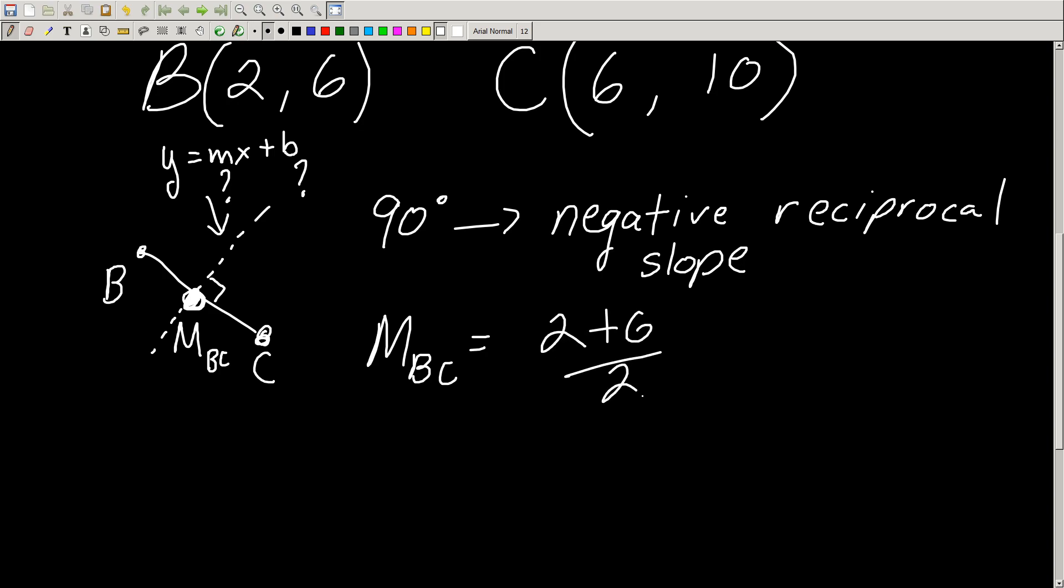Now let's do this together as one. The midpoint of BC is rather simple: you do 2 plus 6 over 2 and 6 plus 10 over 2, and you get a whopping 4 comma 8.